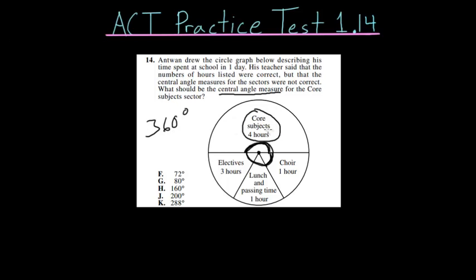To do that, we know that the core subjects occupy four hours, but to figure out what percent of the total day that takes up, we have to know how many hours were spent in total. So we have four from the core subjects, three from electives, one from lunch and passing time, and one from choir. So we have one plus one is two, plus three is five, plus four is nine. So there are nine total hours of the day and the core subjects take up four of those.